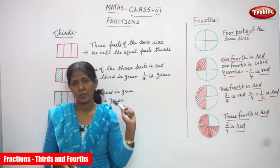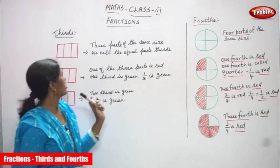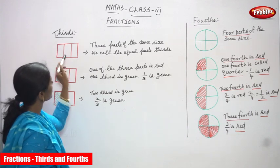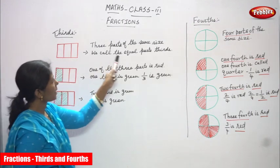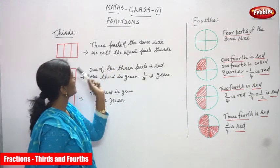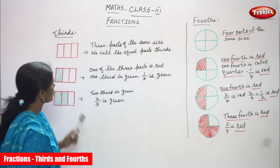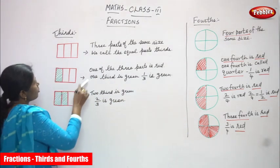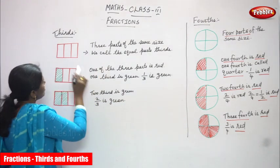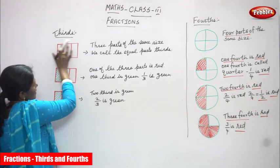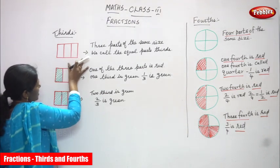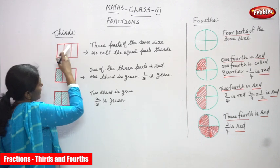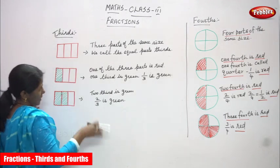First we have seen what halves; now we are going to see thirds. Look at this object — I cut it into three equal parts. Three parts of the same size we call equal parts. Equal parts of three are called thirds. That means I took this object and cut it into three equal parts.